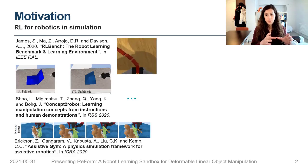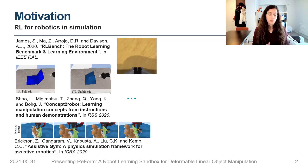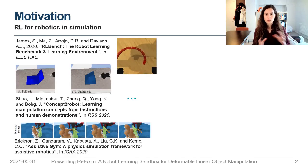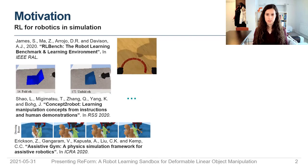Here we're actually putting all that we could find at the time, meaning the rope environment in RLBench, the folding concept in Concept2Robot, and then dressing someone in AssistedGym.